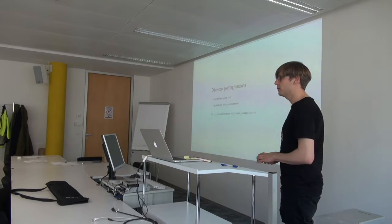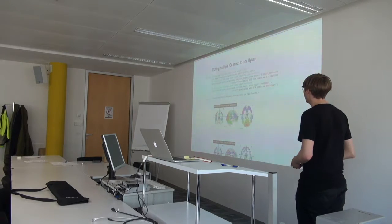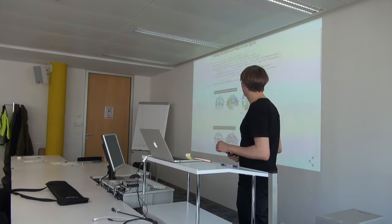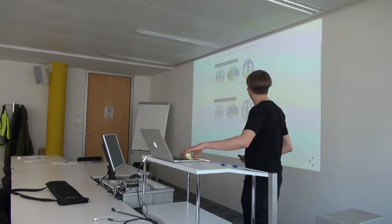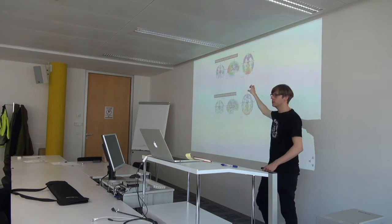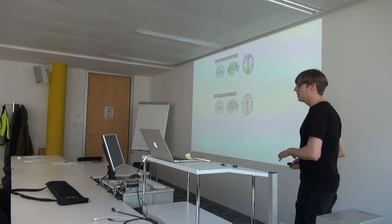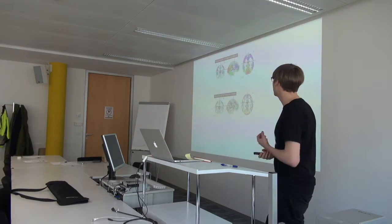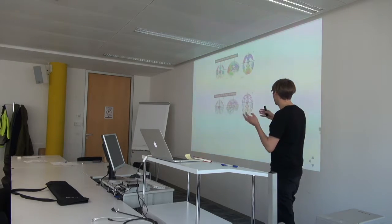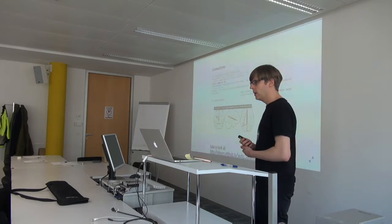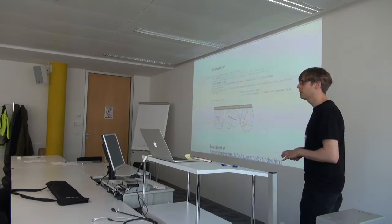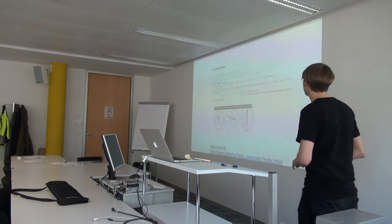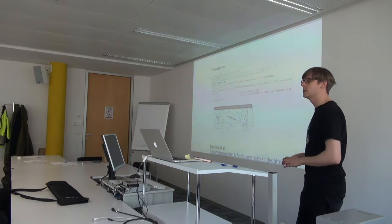Those are the basic plotting functionalities of NiLearn, but there are other very cool tools — like plotting multiple regions of interest from an ICA analysis in one brain, either as clusters or as contours of clusters. ICA results are tricky to visualize at once when you have 20, 40, or 200 different ICs, but you can display them all in one brain. You can also plot connectomes — brain networks — if you have a connectivity matrix and node coordinates, displayed as glass brains.